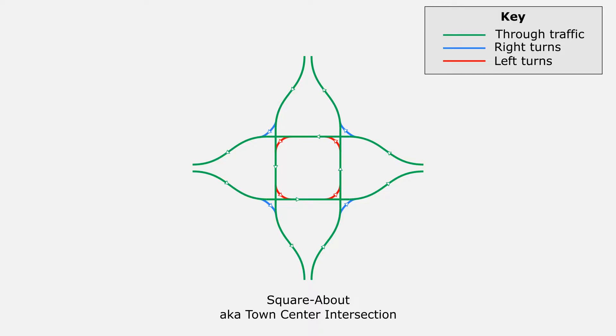So instead of crossing six lanes at once, you can cross three, then wait, and then cross the other three.